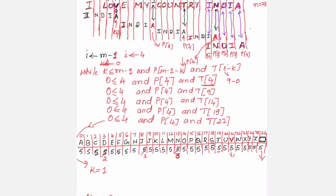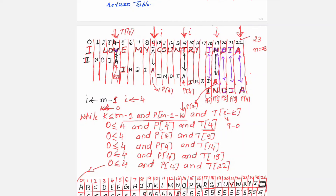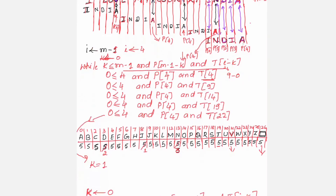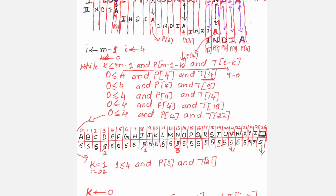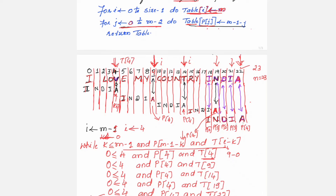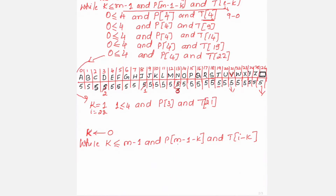With k equal to 1: is 1 less than or equal to 4? Yes. We check p[m-1-1] = p[3] against t[i-k] = t[22-1] = t[21]. p[3] is 'i' and t[21] is 'i' — they match! Increment k; k becomes 2.